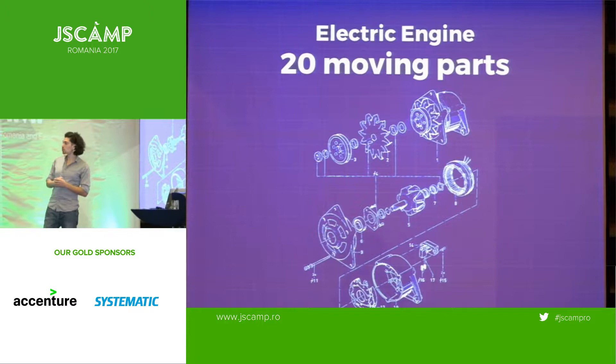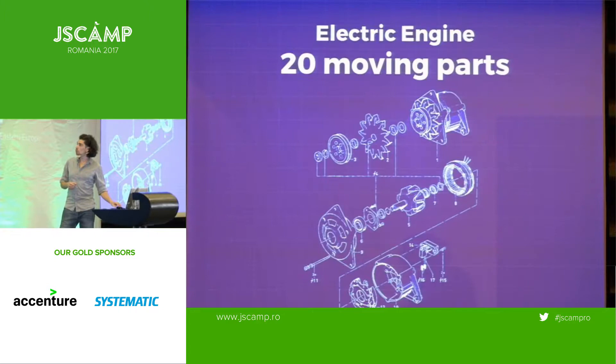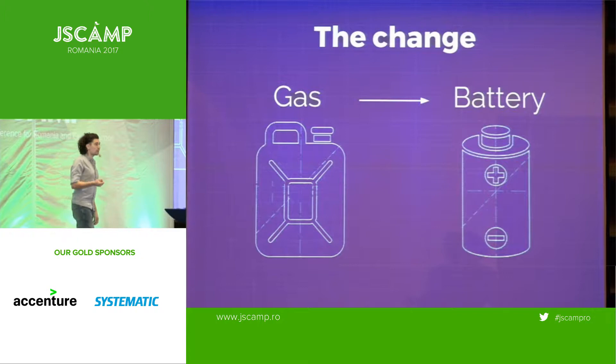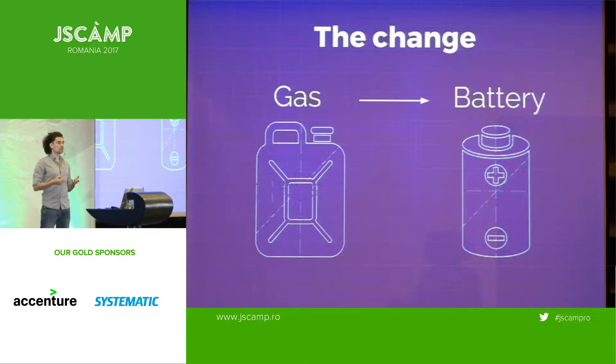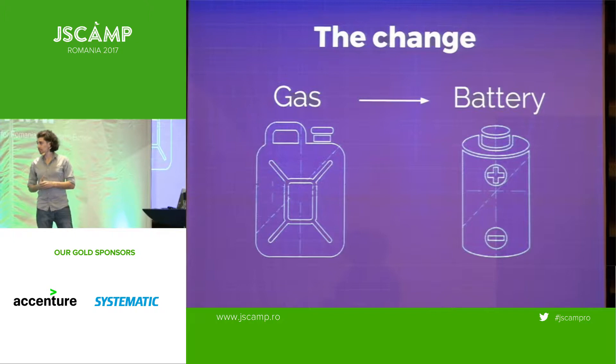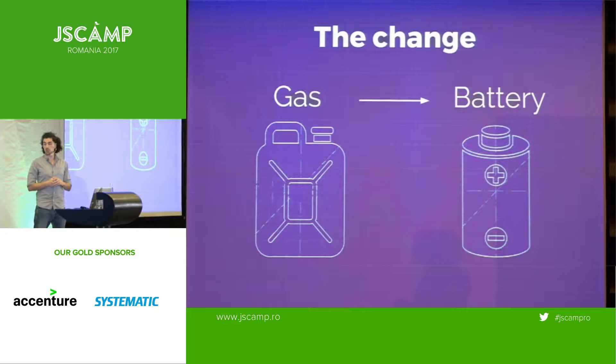So what changed? What was the driving factor to make the transition from 1,000 moving parts to only 20? It wasn't an innovation in engineering — it was an innovation in fuel. Gas needs to be exploded to extract its power, requiring an explosion chamber and many systems of pulleys that drive the train and action the wheels. All that complexity was eliminated the moment we changed the fuel to electric current.